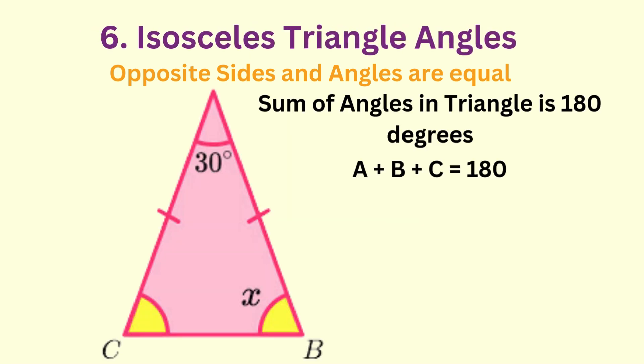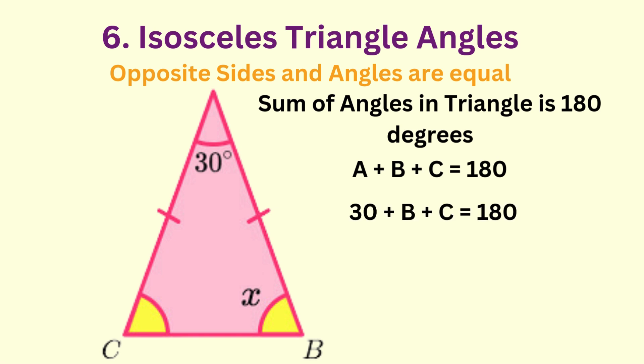In the isosceles triangle shown on the screen, we know that angles in a triangle add to give 180 degrees. We already have 30 at angle A. Therefore, 150 degrees must be shared equally between angles B and C. Divide 150 by 2 and we get 75 degrees for each since they are equal.